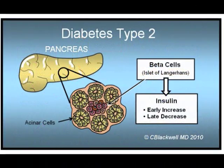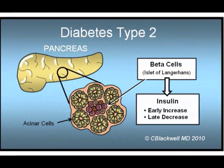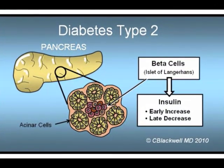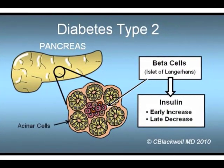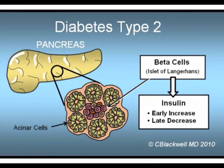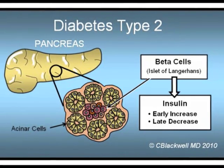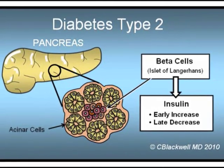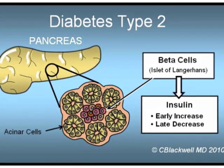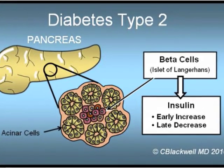Early in type 2 diabetes, the insulin-producing cells may work harder to produce more insulin than normal. Eventually, those cells may become burned out, and the production of insulin drops, requiring use of supplemental insulin.